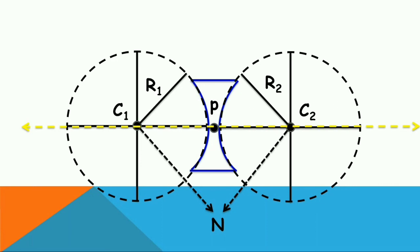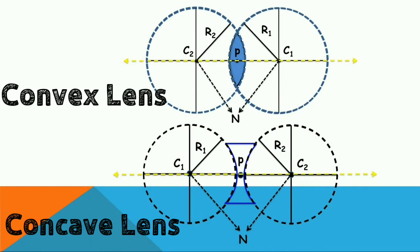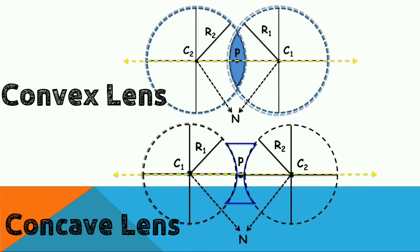Let us compare the concave lens and convex lens to find some differences. In the convex lens, the center of curvature C1 and radius R1 are on the right-hand side of the lens. In the concave lens, C1 and R1 are on the left-hand side, because both are related to the first surface. For the second surface, the convex lens has C2 and R2 on the left-hand side, while the concave lens has them on the right-hand side. I hope you understood. Thank you.